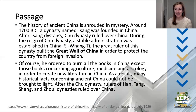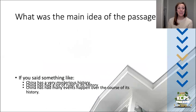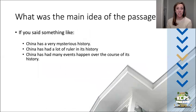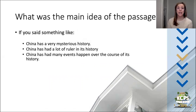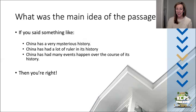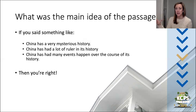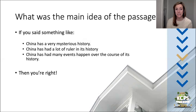All right, let's take a look. If you said something like, 'China has a very mysterious history,' or 'China has had a lot of rulers in its history,' or 'China has had many events happen over the course of its history,' then you are right. There are a lot of details in that passage about the rulers and their names and events that happened, but the main idea is captured by one of those three sentences.